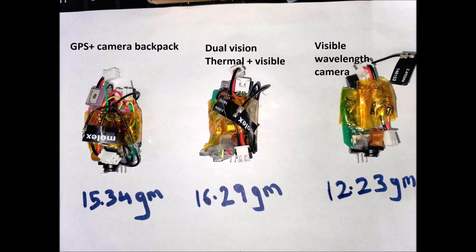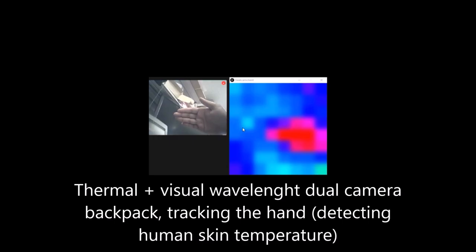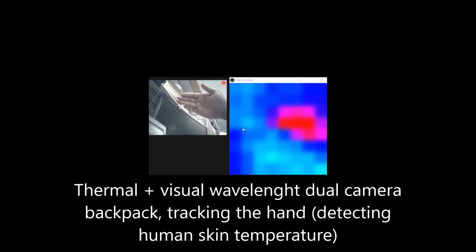This video showcases our multiple payload backpack systems for the cyborg cockroach, which has a GPS enabled camera, a thermal camera, and a visual wavelength camera system. The thermal camera can be used to detect human skin temperature of survivors stuck under debris in a search and rescue scenario.